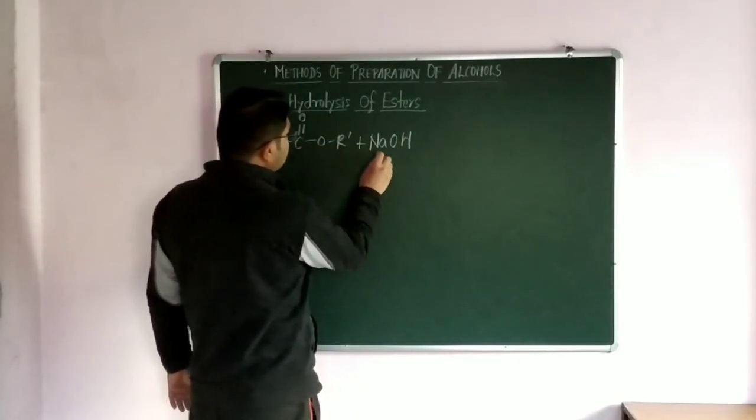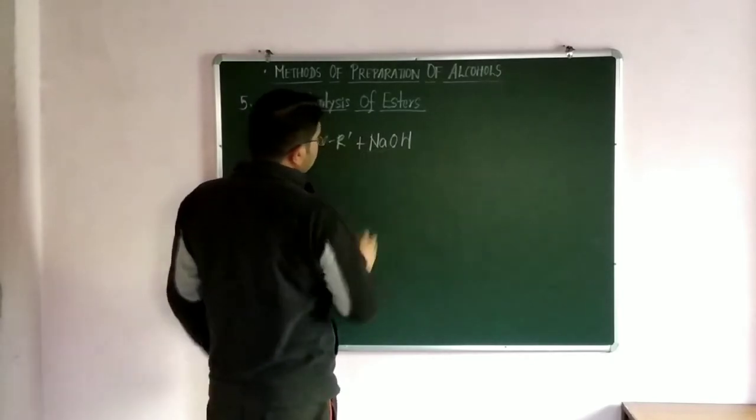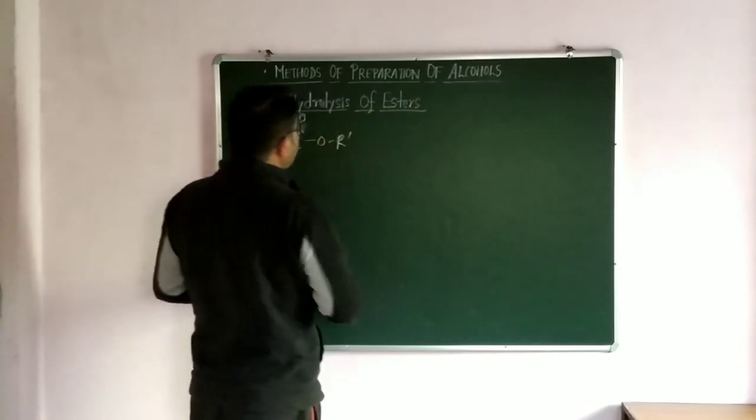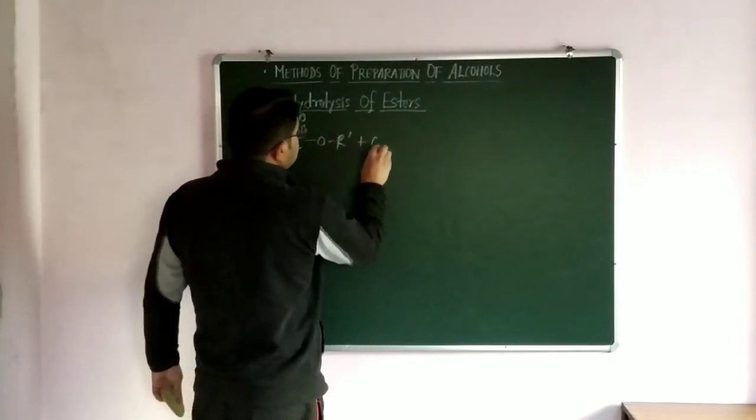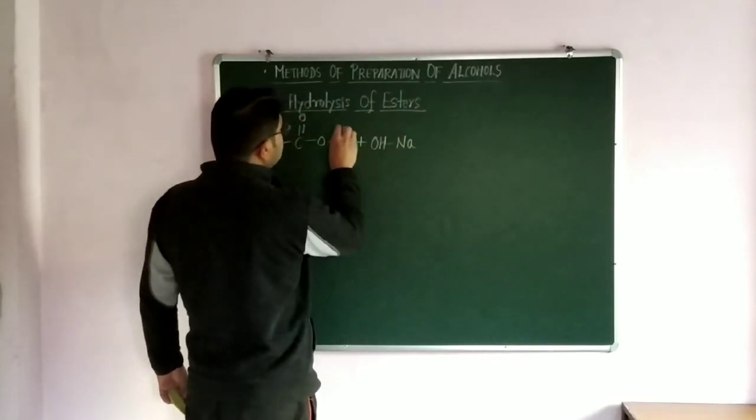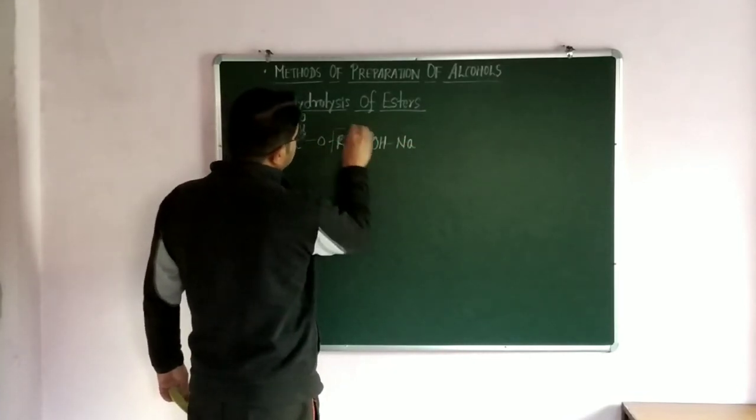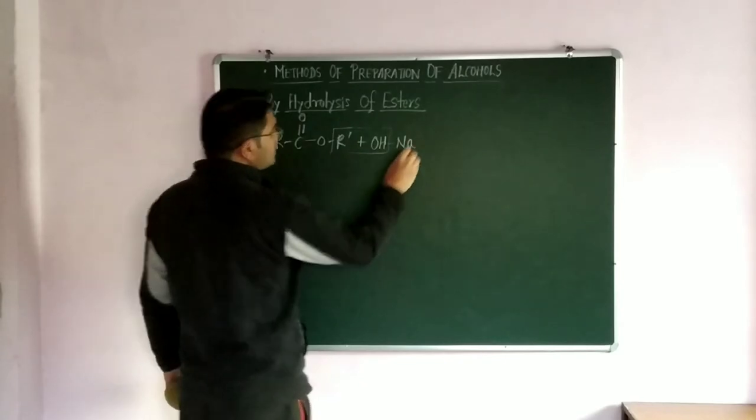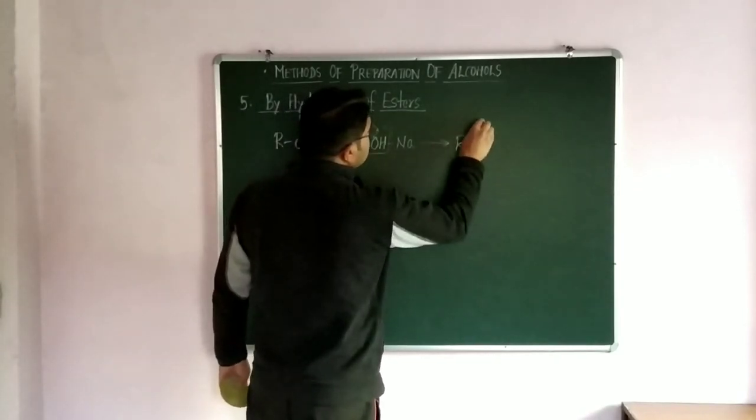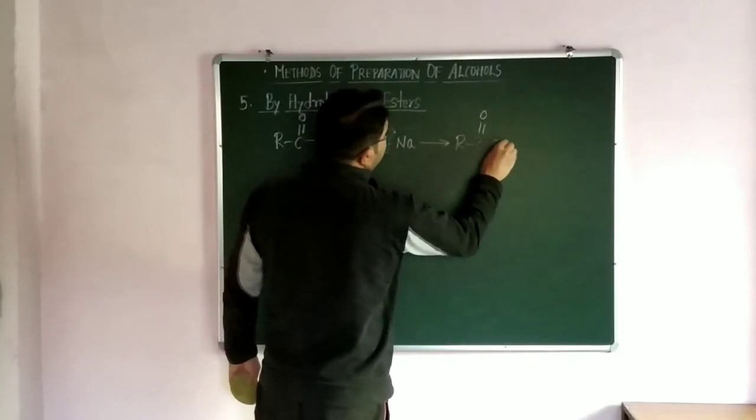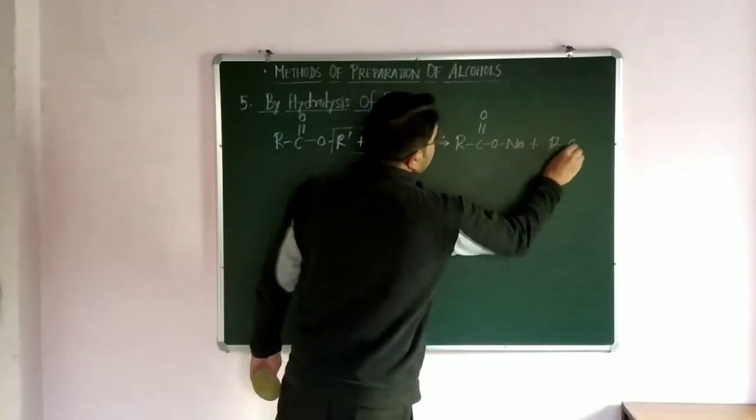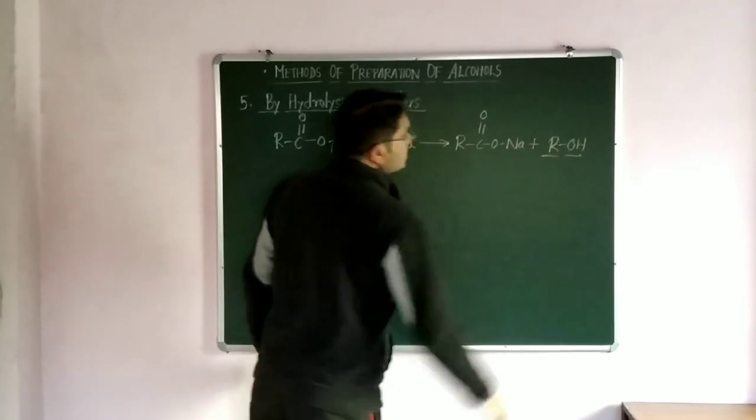RCOOR' part is attached with this part. When we write NaOH, if we change the representation of NaOH in this way, then it is easy to understand the reaction. Here ROH part is separated out with the elimination of the salt RCOONa. This is sodium salt of acid and the major part is ROH. So this is one of the preparation methods of alcohols from esters.